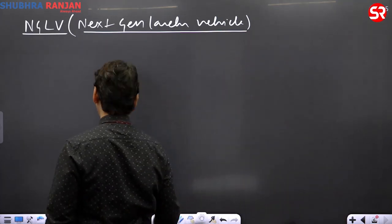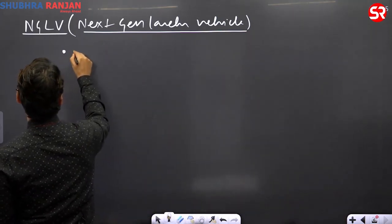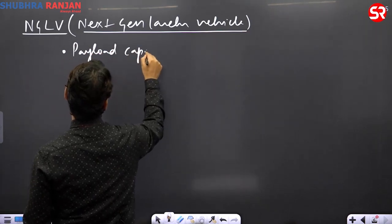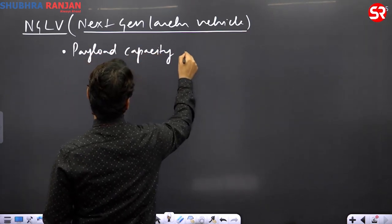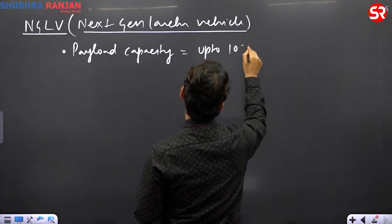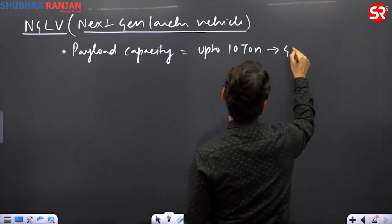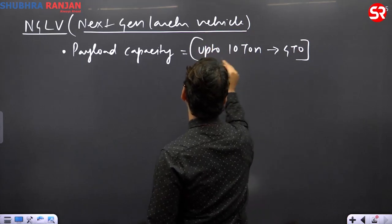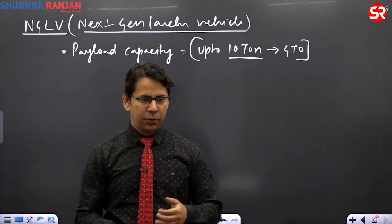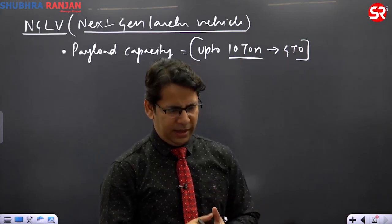So what ISRO is claiming, that payload capacity will be up to 10 tons to GTO. Huge. See the payload is 10 tons, up to 10 tons and it is expandable.